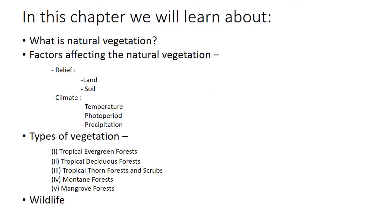In this chapter we will learn about what is natural vegetation and the factors affecting it. There are two major factors: relief and climate. Relief is subdivided into land and soil. Climate is subdivided into temperature, photoperiod, and precipitation. We will also learn about the five major types of vegetation: tropical evergreen forests, tropical deciduous forests, tropical thorn forests and scrubs, montane forests, and mangrove forests.